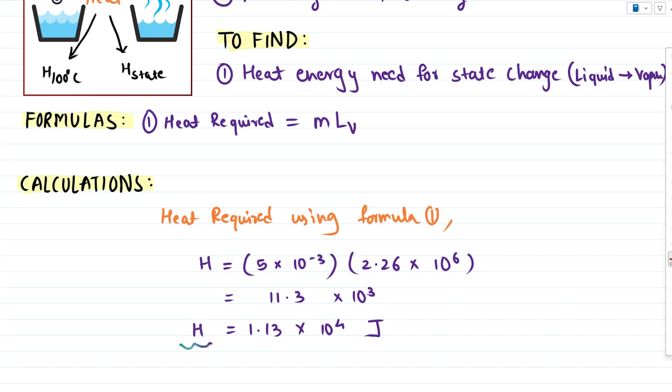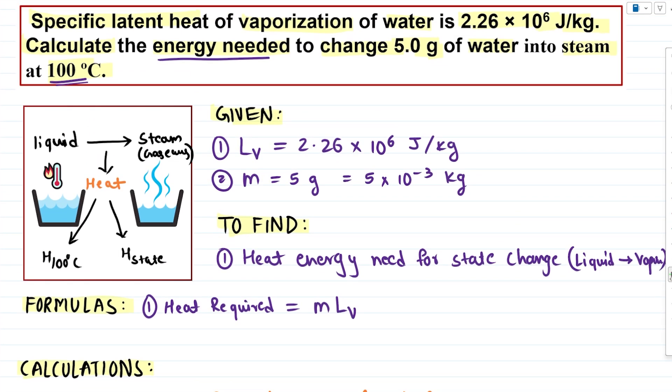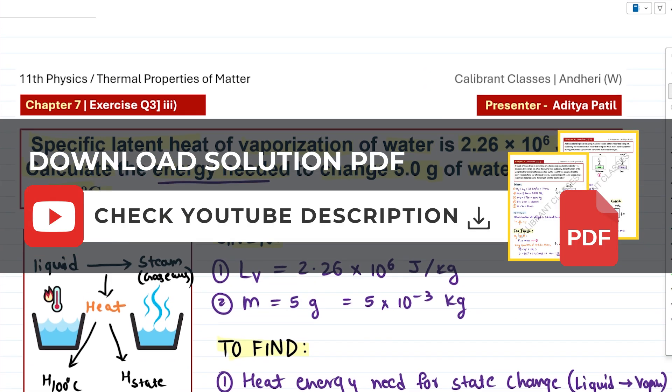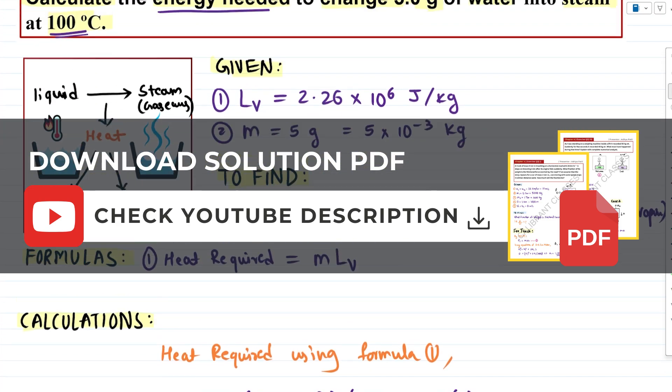So this is the amount of heat which is required for the conversion of water into steam. Conversion of 5 grams of water into steam. That's our final answer. If you want the solution or PDF of this solution, make sure to check out the description. Have a nice day.